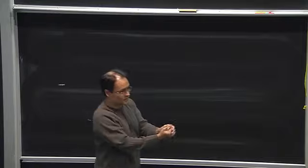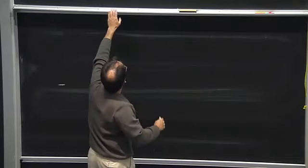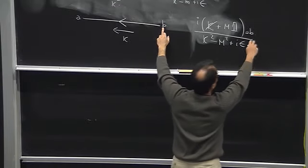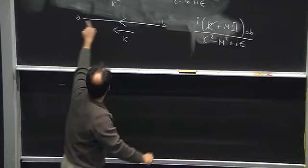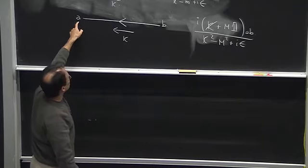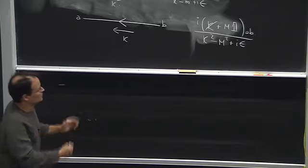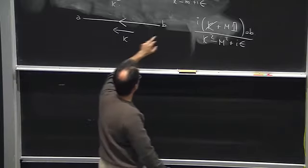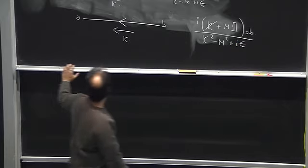Psi annihilates a nucleon, so we should have the b index here, and then ba is a propagator from this point b to this point a. In coordinate space, if you do it carefully, you will find that this is the correct convention and the correct ordering of the indices.